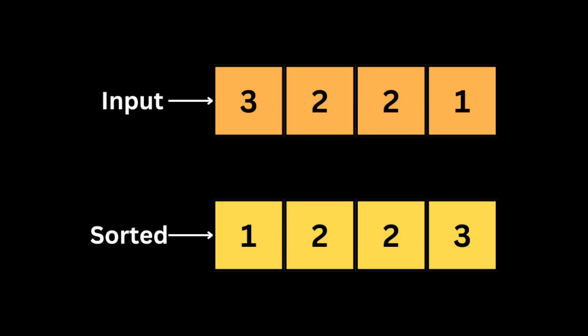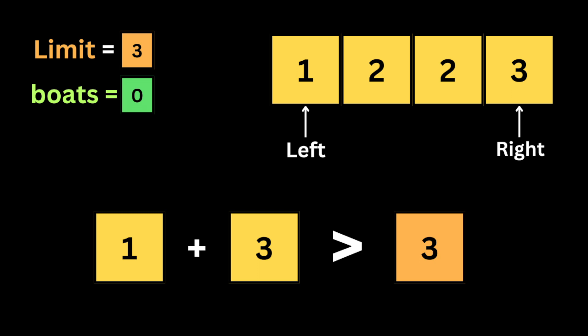After sorting the array, all smaller numbers are on the left and all larger numbers are on the right. We take advantage of this by placing the lightest and heaviest person in the same boat. We set the left pointer at the start of the array and the right pointer at the last element, and initialize a variable 'boats' to count how many boats we'll need.